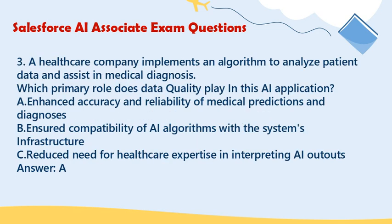Question 3: A healthcare company implements an algorithm to analyze patient data and assist in medical diagnosis. Which primary role does data quality play in this AI application? A. Enhance accuracy and reliability of medical predictions and diagnoses. B. Ensure compatibility of AI algorithms with the system's infrastructure. C. Reduce the need for healthcare expertise in interpreting AI outputs. Answer: A.